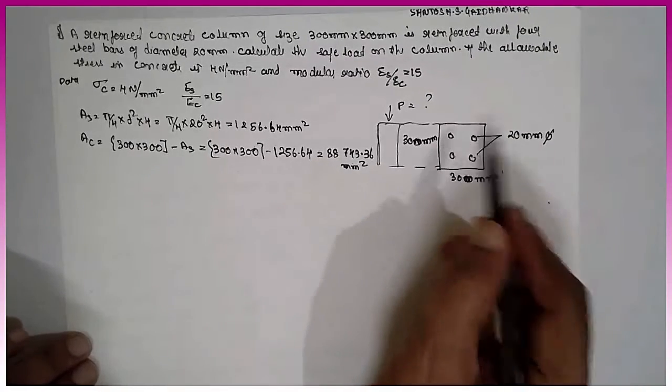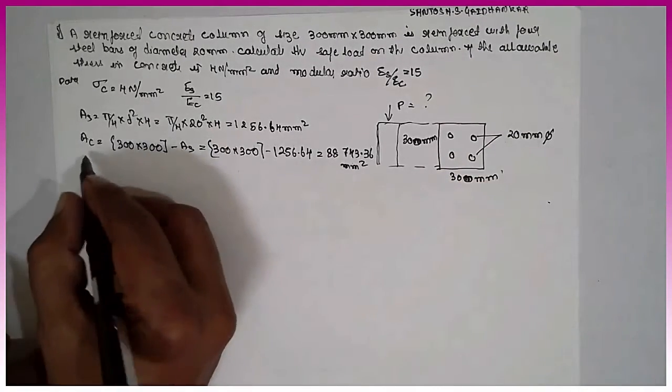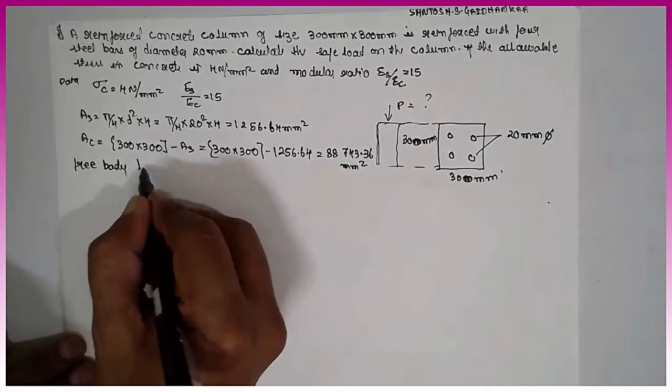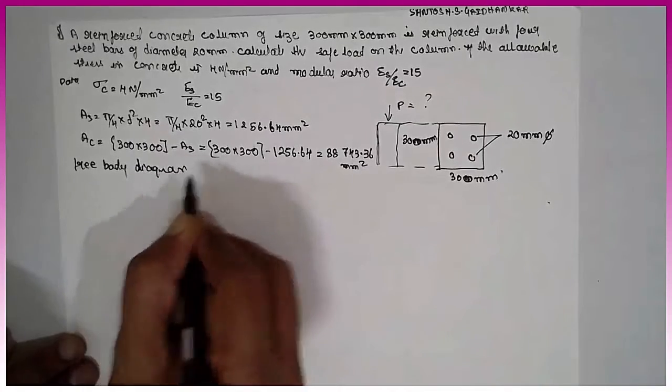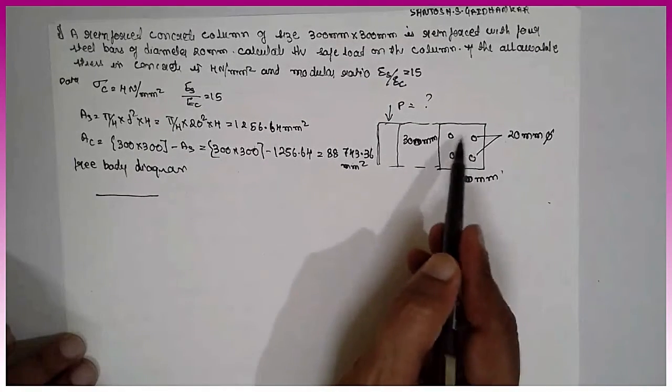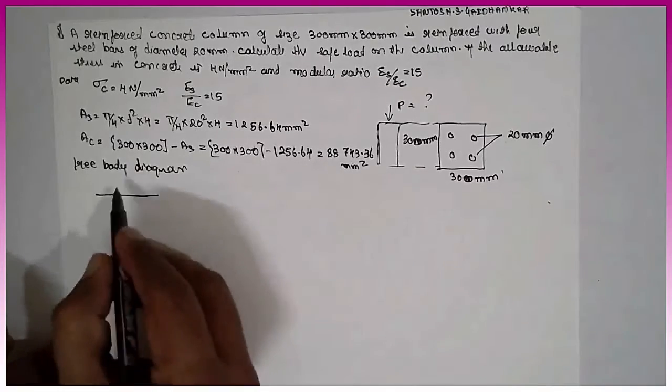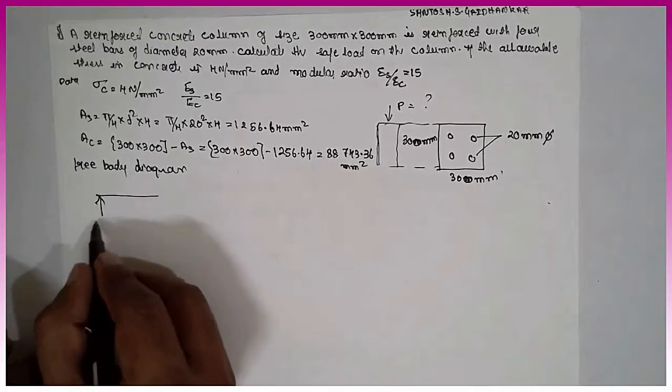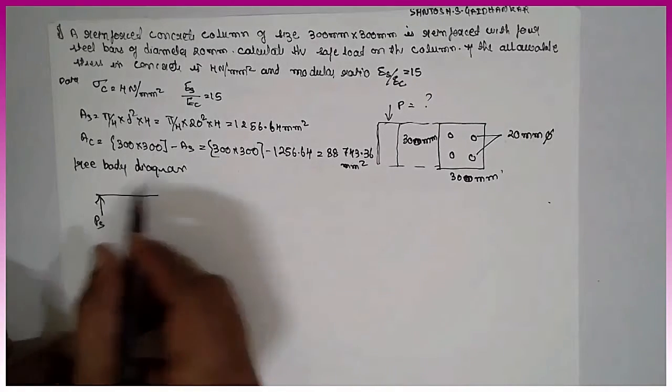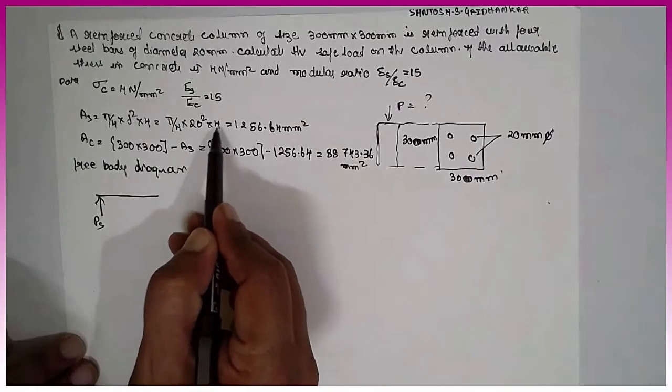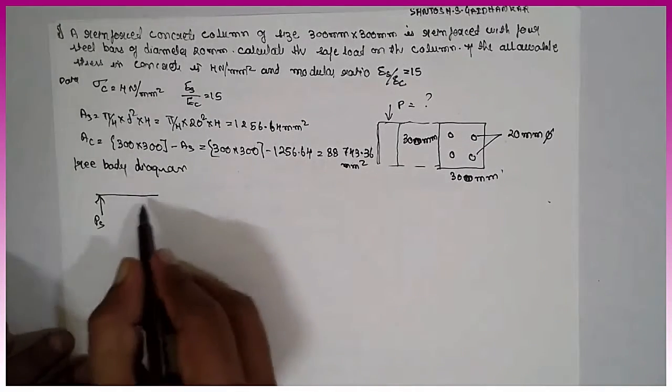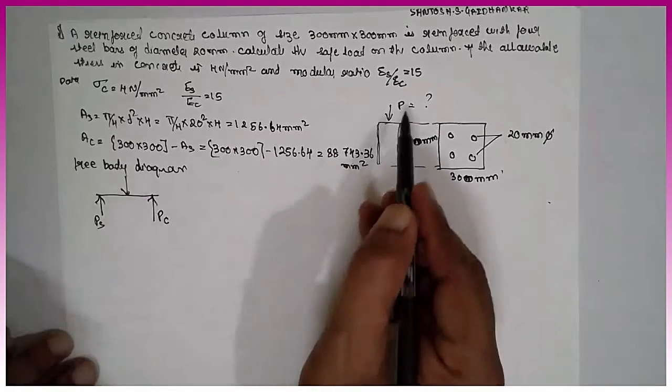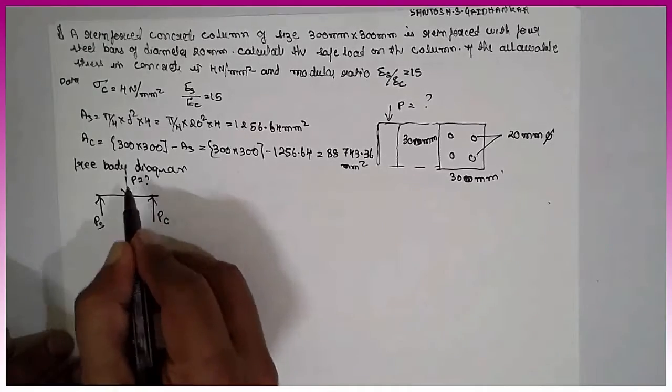Now, we are going to find out the P load acting over the surface. Free body diagram. Now, this is the free body diagram. The entire 4 rods I am considering a single rod here. That means reaction will be upward. As the P acts downward, the reaction will be upward. I will consider this is Ps. I am not writing 4 Ps because I have already taken 4 here.